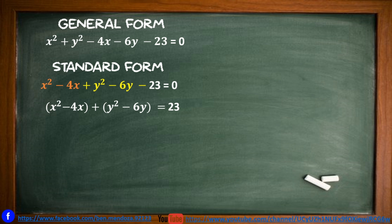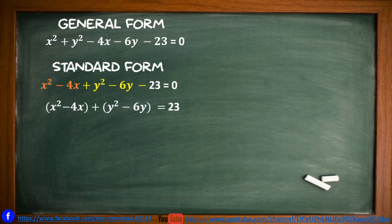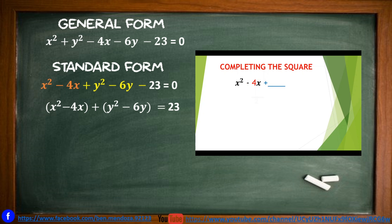Notice we have grouped x squared minus 4x and y squared minus 6y. The objective is to complete the square. For x squared minus 4x: get half of 4, which is 2, then square it to get 4. So we add 4 to complete the square of x squared minus 4x.